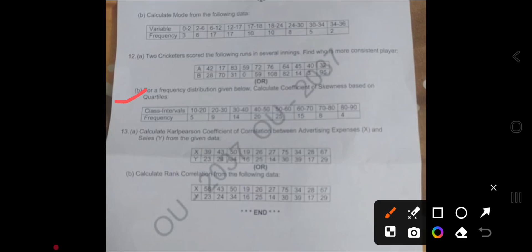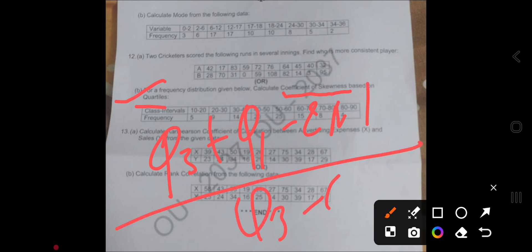Instead they asked mode, so we didn't discuss mode—we discussed only mean and median. Now coming to Unit 4, they asked about the twelfth question B: calculation of coefficient of skewness and quartiles, which is Bowley's skewness.